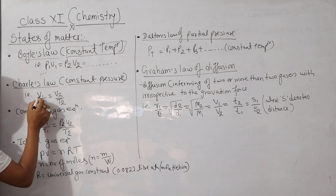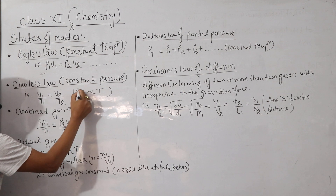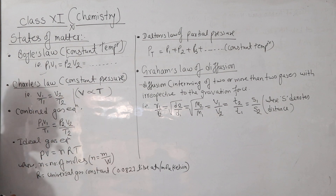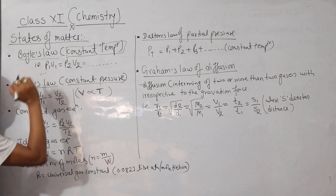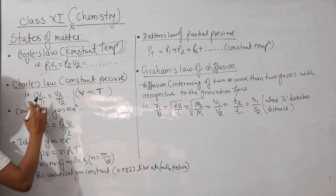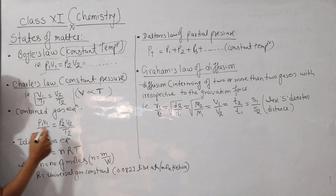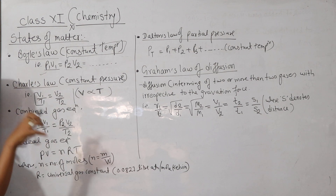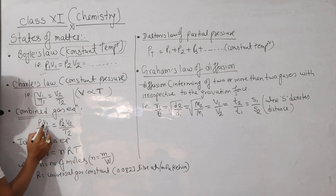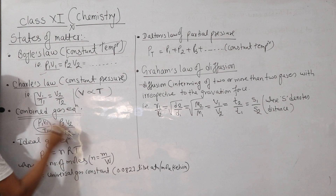What is the value of the volume and temperature? It is a direct relation — the volume is directly proportional to temperature. This will be combined with Charles' law — this is the combined gas equation: P1V1 by T1 is equal to P2V2 by T2.